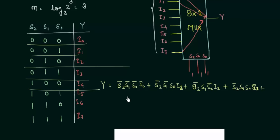And let's complete the rest. S2, s1 complement, s0 complement, i4. S2, s1 complement, s0, i5.